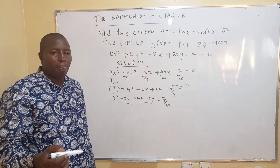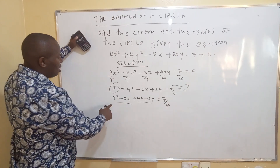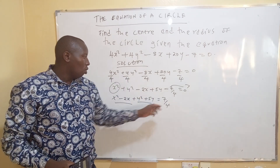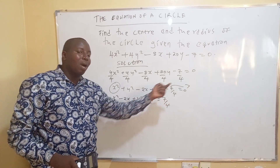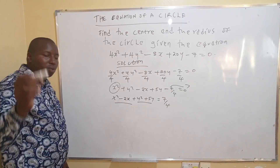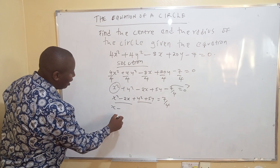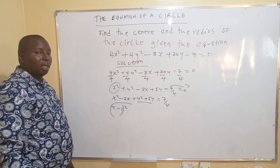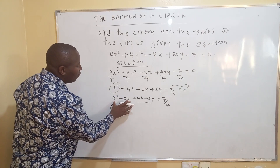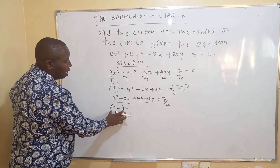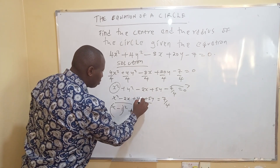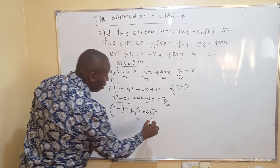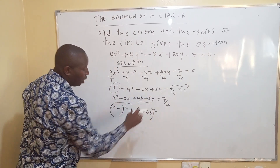We solve this by completing the square. Since the coefficient of x squared is 1 and y squared is 1, whatever you add on the left you must add on the right. For x squared minus 2x, take the coefficient 2, divide by 2, get 1, so you get (x minus 1) squared. For y squared plus 5y, take 5 divided by 2, which is 2.5, so you get (y plus 2.5) squared.